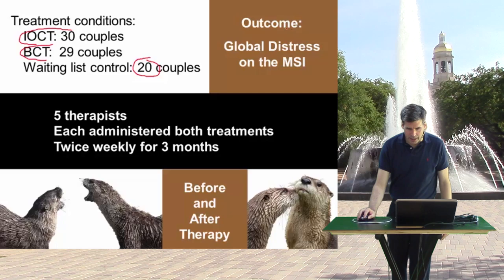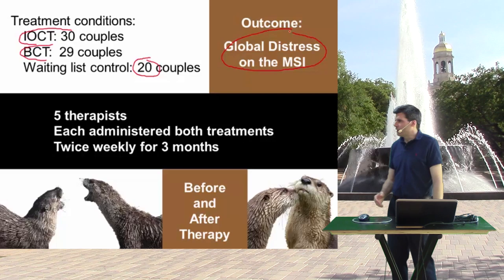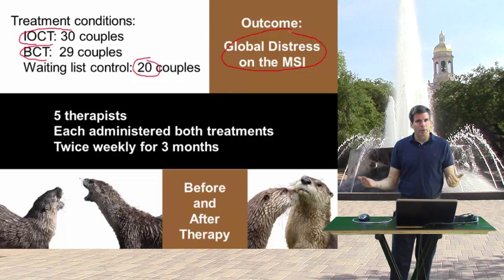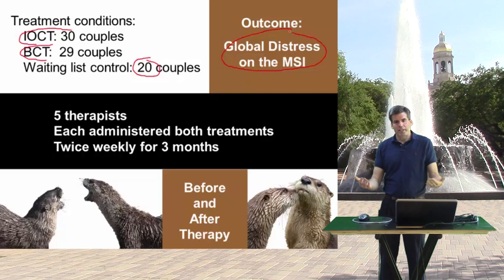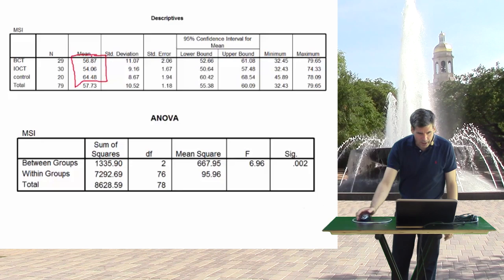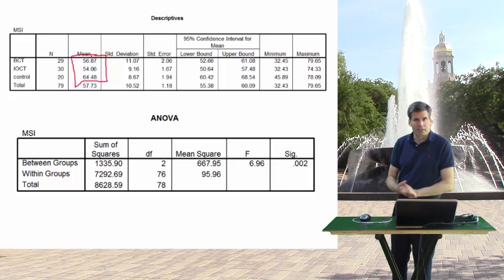The outcome variable is something called global distress, a scale from an instrument called the Marital Satisfaction Inventory, or MSI — the global distress scale from the MSI. Previously, we looked at the omnibus question: overall, is there a difference between groups? And when we did that, we found that indeed there was a difference. This was the output we've been looking at, showing the means for the three groups. We calculated eta squared to find the percent of variance explained, and then looked at the F value to see if that's significant.